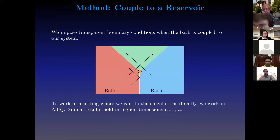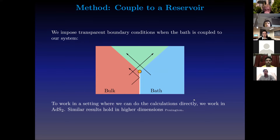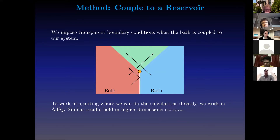You can either work with this setup and derive various qualitative statements, or you can try to do the calculation directly. Doing the calculation directly and explicitly is much more tractable if you work in ADS2 than in higher dimensions. In higher dimensions you can work with spherical symmetry and make similar statements, as was done by Jeff. We're going to work in a very explicit setting in ADS2 in JT gravity.